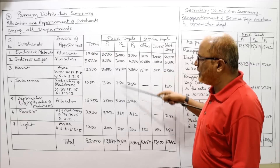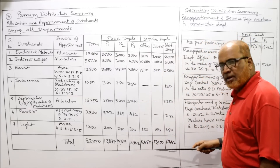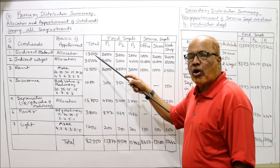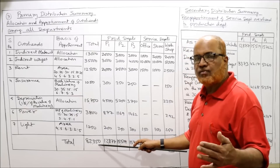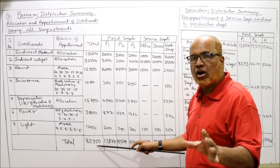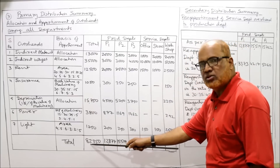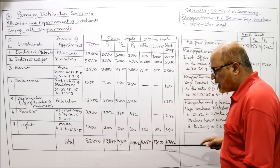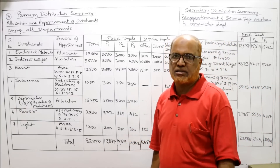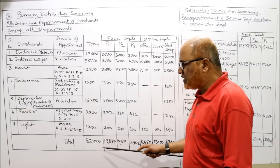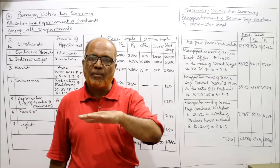Now find the totals for P1, P2, P3, Office, Stores, and Workshop, then take the total of the total column, which gives 82,350. Cross-verify: add up all six department totals horizontally — you should also get 82,350. If both the vertical and horizontal totals match, your calculations are correct. This confirms the primary distribution — allocation and apportionment of overheads among all departments — is complete.